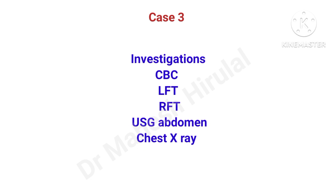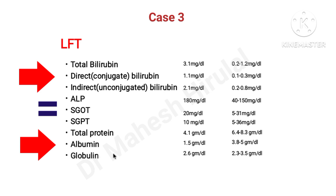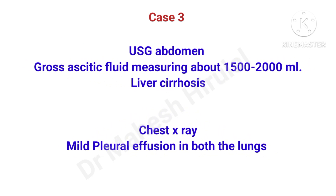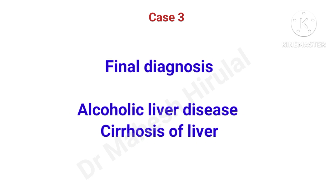The physician chose investigations including CBC, LFT, RFT, USG abdomen and chest X-ray. LFT shows increase in bilirubin, especially indirect bilirubin raised more than direct bilirubin. SGOT and SGPT were within normal limits towards the lower end. Total protein is drastically reduced. USG abdomen shows gross ascites with fluid measuring about 1500 to 2000 ml and also shows liver cirrhosis. Chest X-ray shows mild pleural effusion in both lungs. The final diagnosis is alcoholic liver disease with cirrhosis of liver.